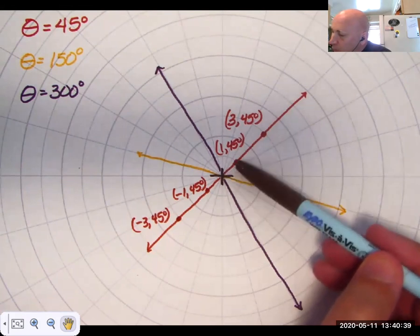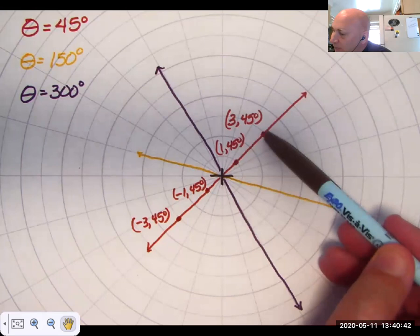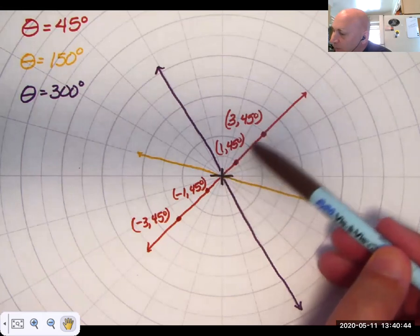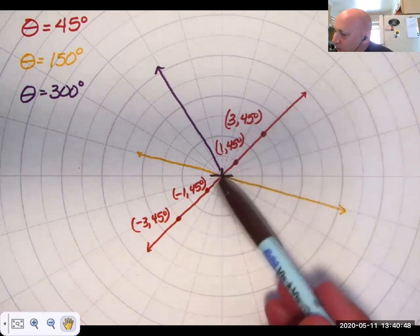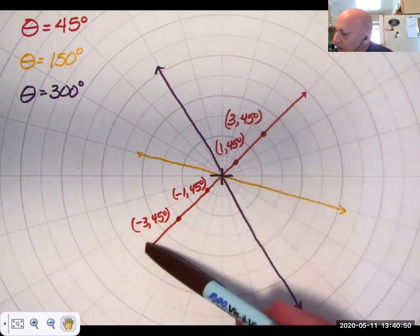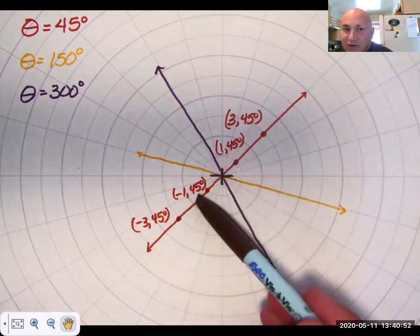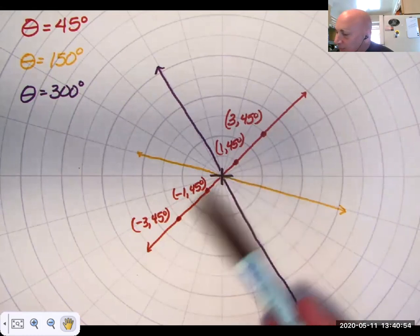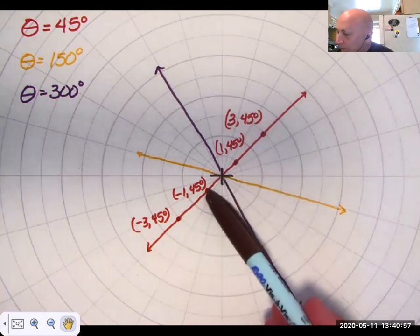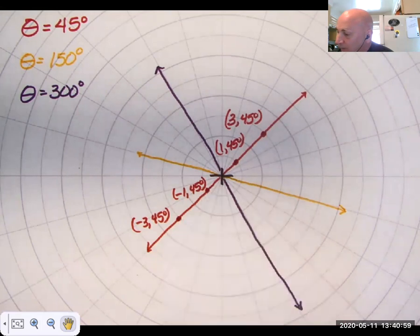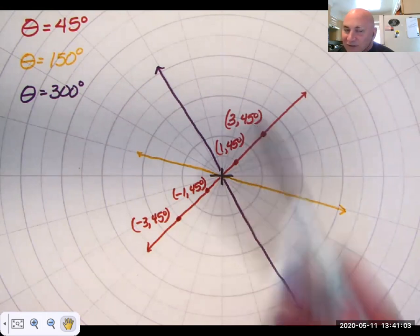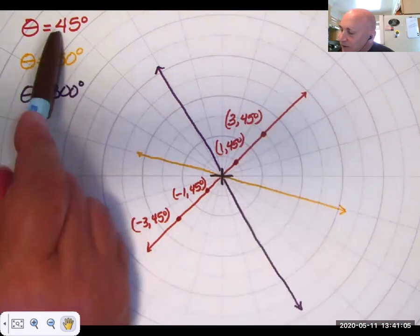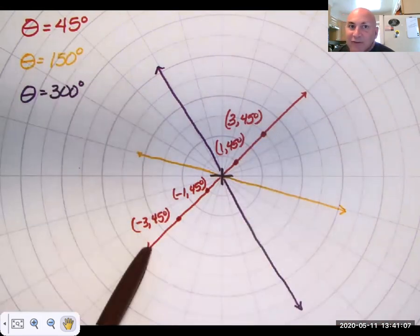Here's the point one comma 45 degrees, three comma 45 degrees. So 45 degrees in its direction with positive R's. If we go to negative R's, we're down here, what you might consider 225 degrees. But it's still a 45 degree angle. It's just that this is a negative one for R and this is a negative three for R. So you can see that all these points have 45 degrees as theta.